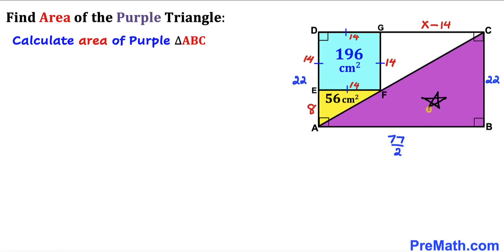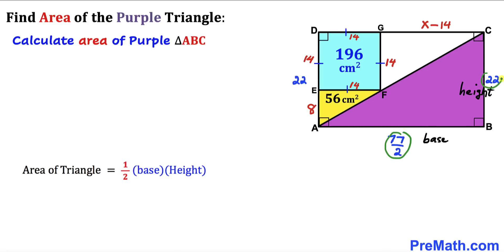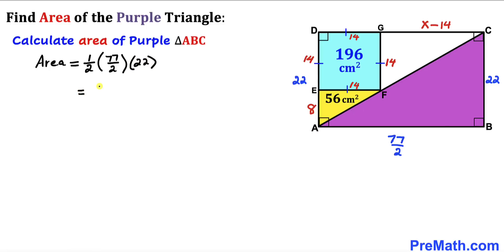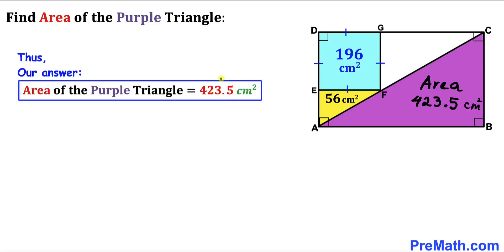For our final step, let's calculate the area of purple triangle ABC using area = ½ × base × height. Our base is 77/2 and our height is 22. So area = ½ × (77/2) × 22 = 847/2 = 423.5 cm². The area of the purple triangle is 423.5 cm². Thanks for watching and please don't forget to subscribe to my channel for more exciting videos.